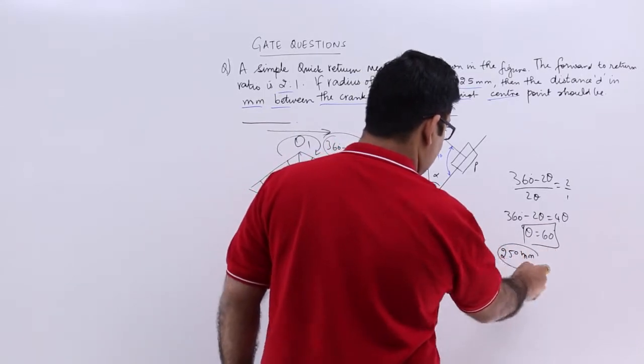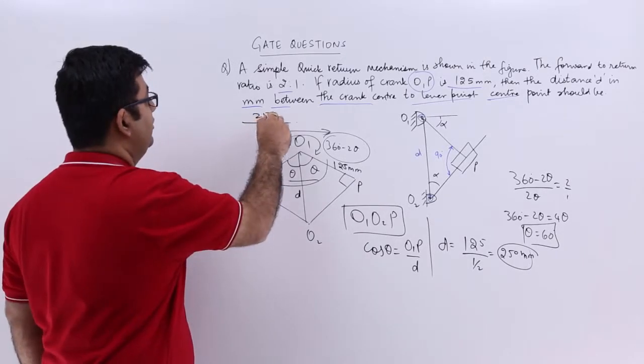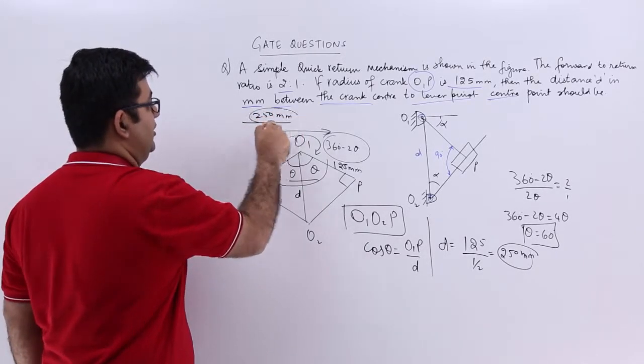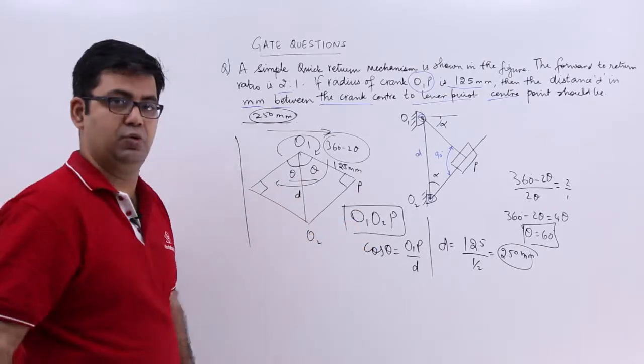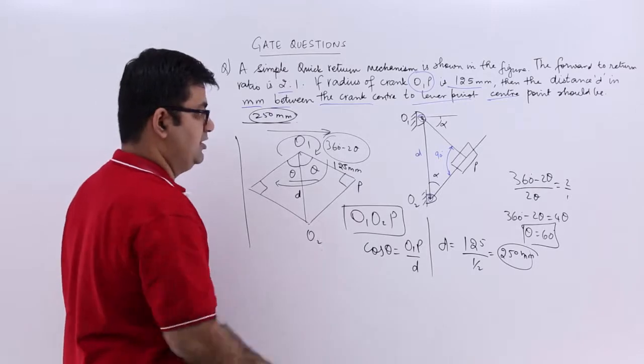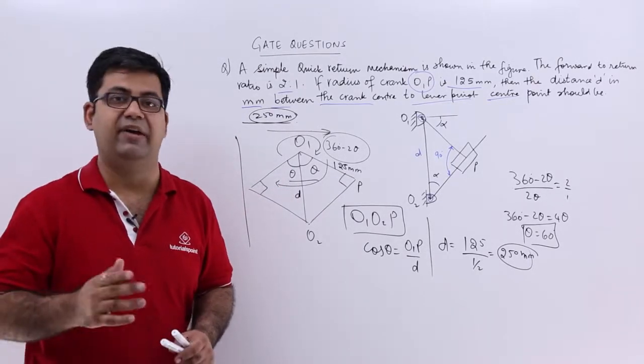So the distance O1 O2, which is required to be found out is 250 millimeters. So it is a fairly simple question. Should use the extreme positions in the two cases and the rest is very easy geometrically. Now let's move on to question number 5.